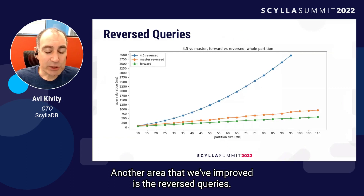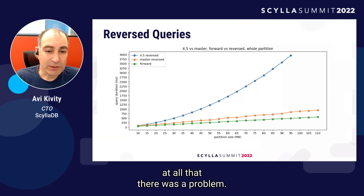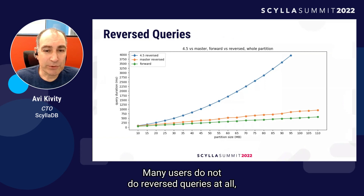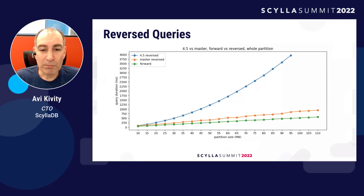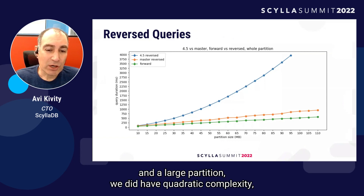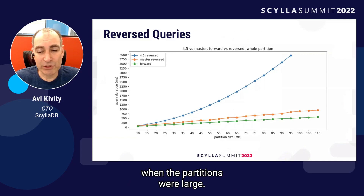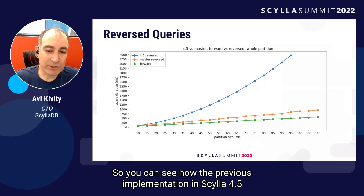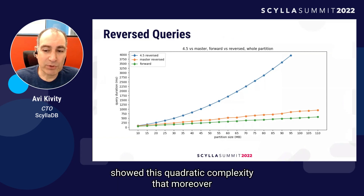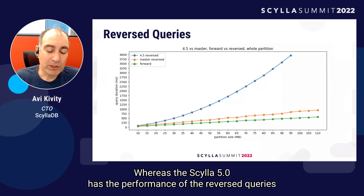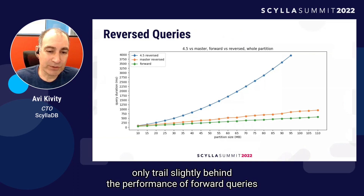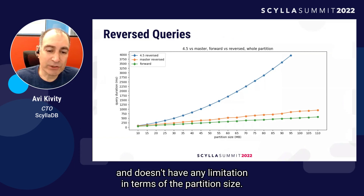Another area we've improved is reverse queries. This is an area you might not have noticed had a problem — many users do not do reverse queries at all, or if you do reverse queries with small partitions, you might not notice any issue. But with the combination of reverse queries and a large partition, we did have quadratic complexity, which translated to very long query times. You can see how the previous implementation in Scylla 4.5 showed this quadratic complexity that ended in failure at around 100 megabytes, whereas Scylla 5.0 has performance that only trails slightly behind forward queries and has no limitation in terms of partition size.